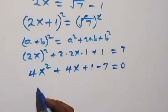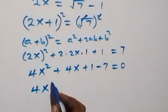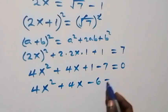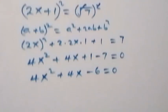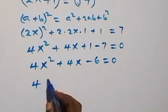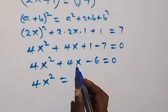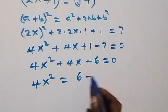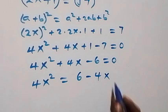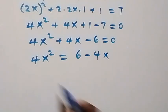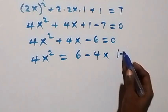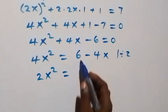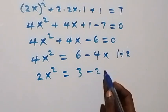This simplifies to 4x² + 4x - 6 = 0. Dividing everything by 2, we reduce this to 2x² = 3 - 2x. So we have the key relation: 2x² equals 3 minus 2x.